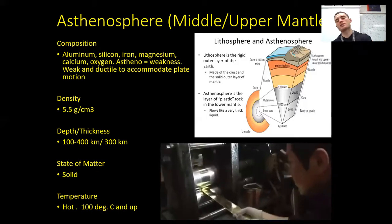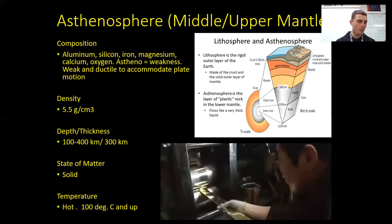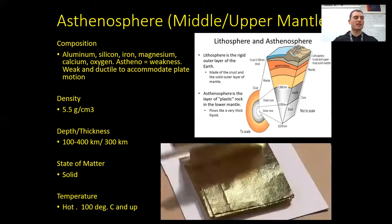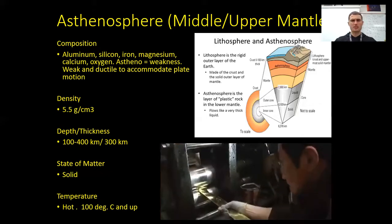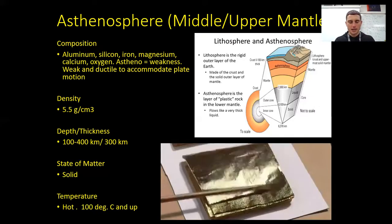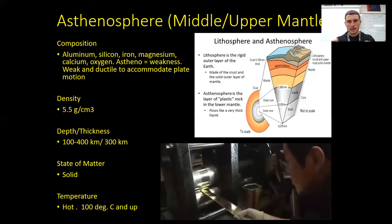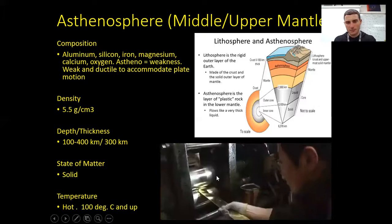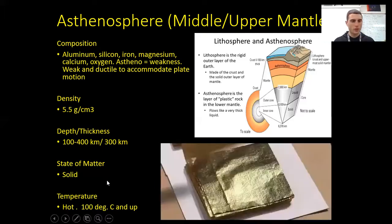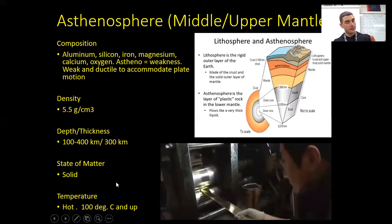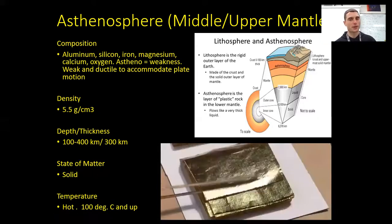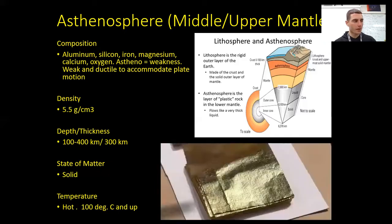The asthenosphere — we've got all these elements in the composition. But what does 'astheno' really mean? Most of us have never heard of that. Astheno means weak, malleable — it's ductile. Think of it like super hot Play-Doh. Is Play-Doh still a solid? Yes, it is a solid, but it's like a gooey solid, a flexible solid. I can kind of bend it and flex it like it's a piece of Laffy Taffy. Record the same numbers. State of matter is always going to be solid unless it's the outer core. Temperature is 100 degrees Celsius and up — it's going to be like a Play-Doh: not a liquid, but a bendable, flexible solid.